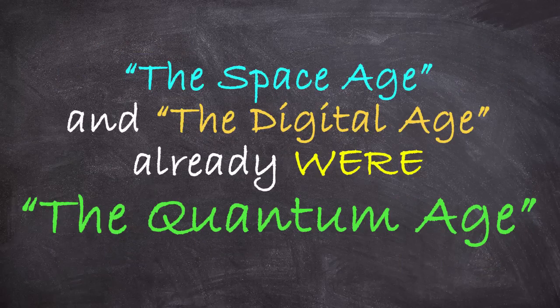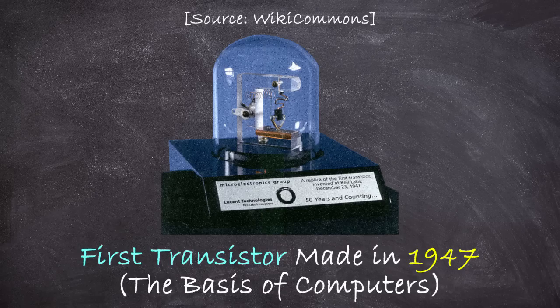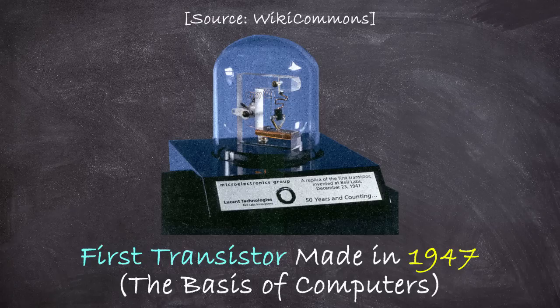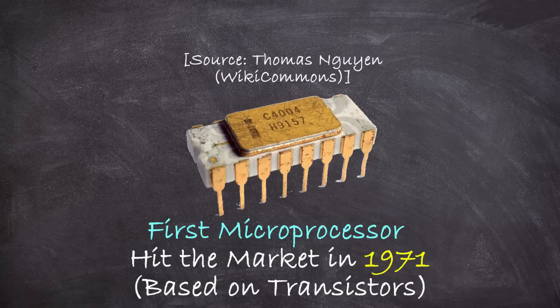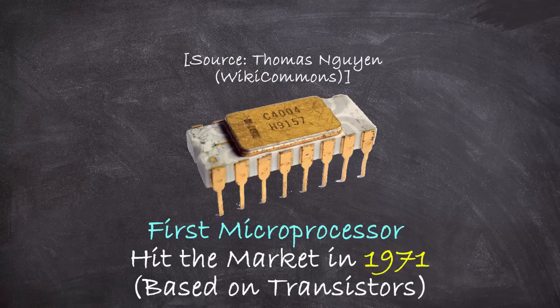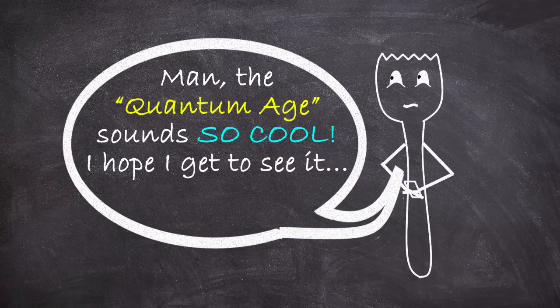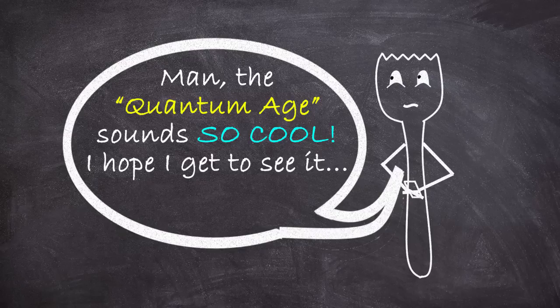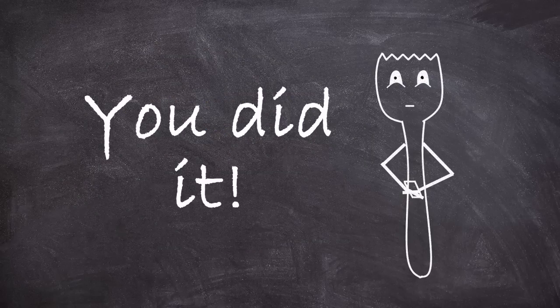The space age and the digital age were the quantum age. Nothing against space exploration, but the first transistor, the quantum device at the heart of computing technology, was invented in 1947. And by 1971, Intel had released the first consumer microprocessor based on those devices. So if you want to live to see the quantum age, I mean, good job. You did it. I knew you could do it.